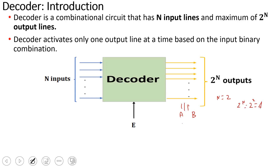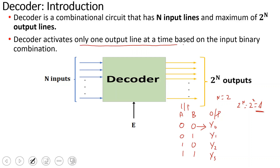If you look at AB, the combinations are: 0,0 then 0,1 then 1,0 then 1,1. There are 4 outputs: y0, y1, y2, and y3. When input AB is 0,0 — output y0 is 1 and y1, y2, y3 are 0. When input is 0,1 — y1 is 1. For input 1,0 — y2 is 1.